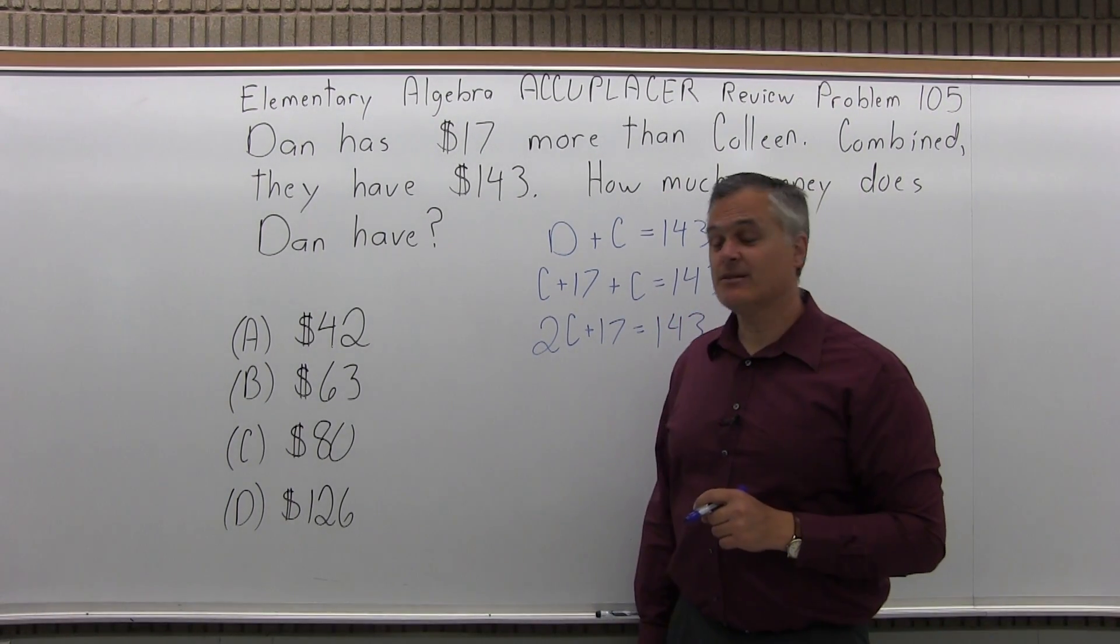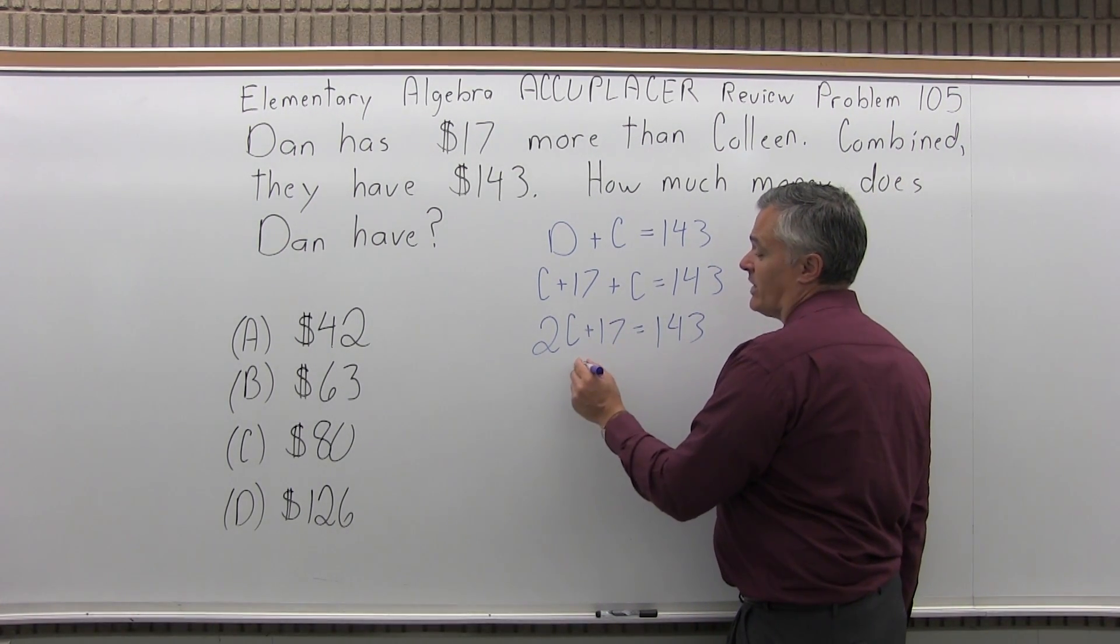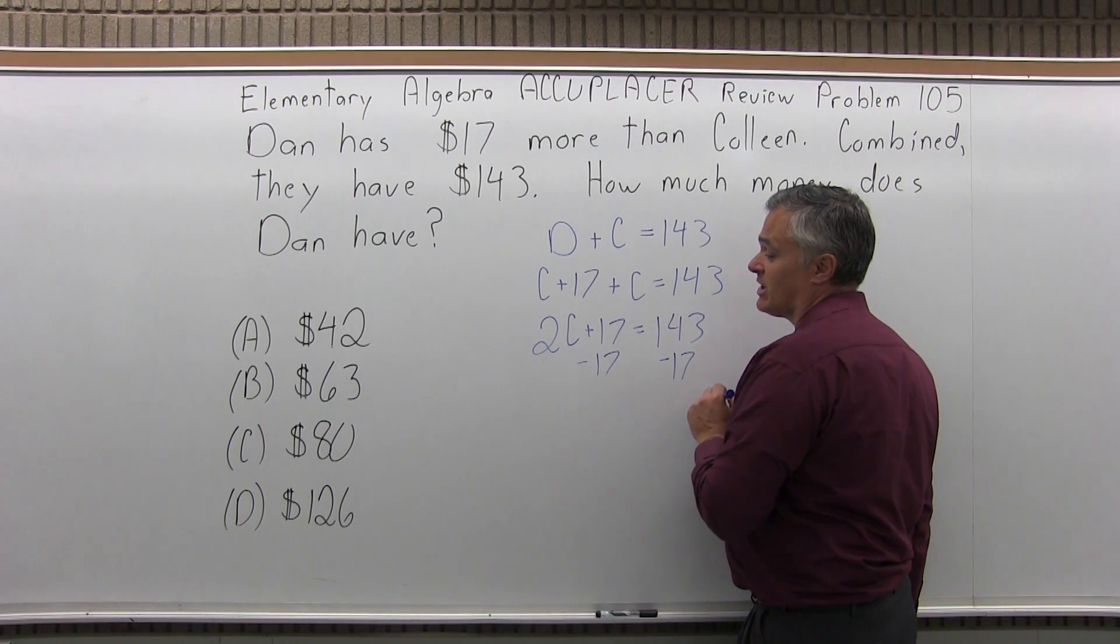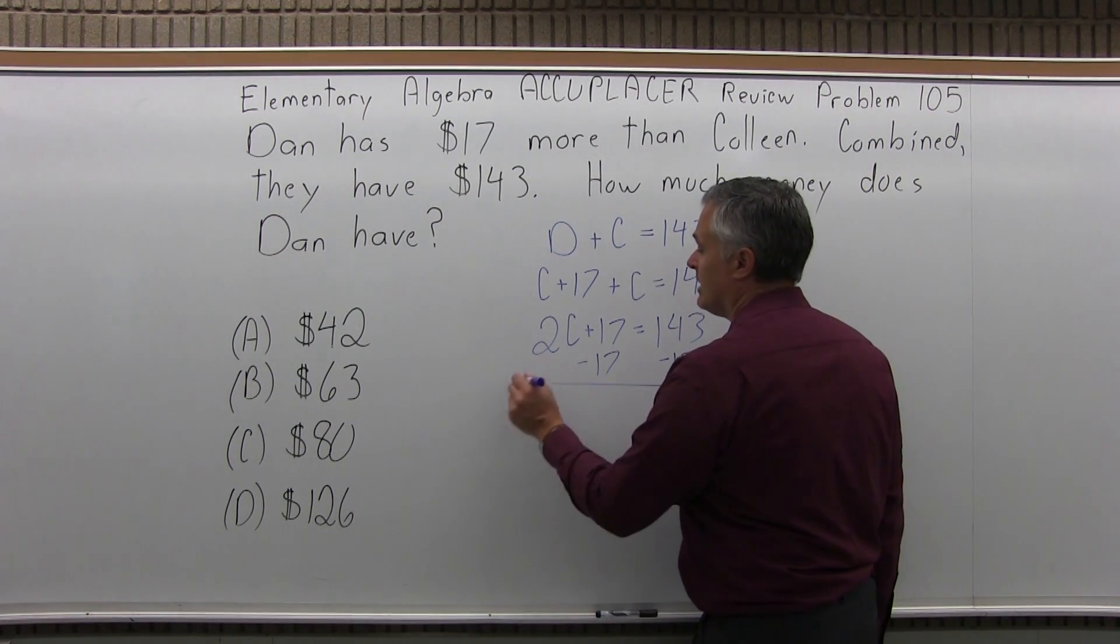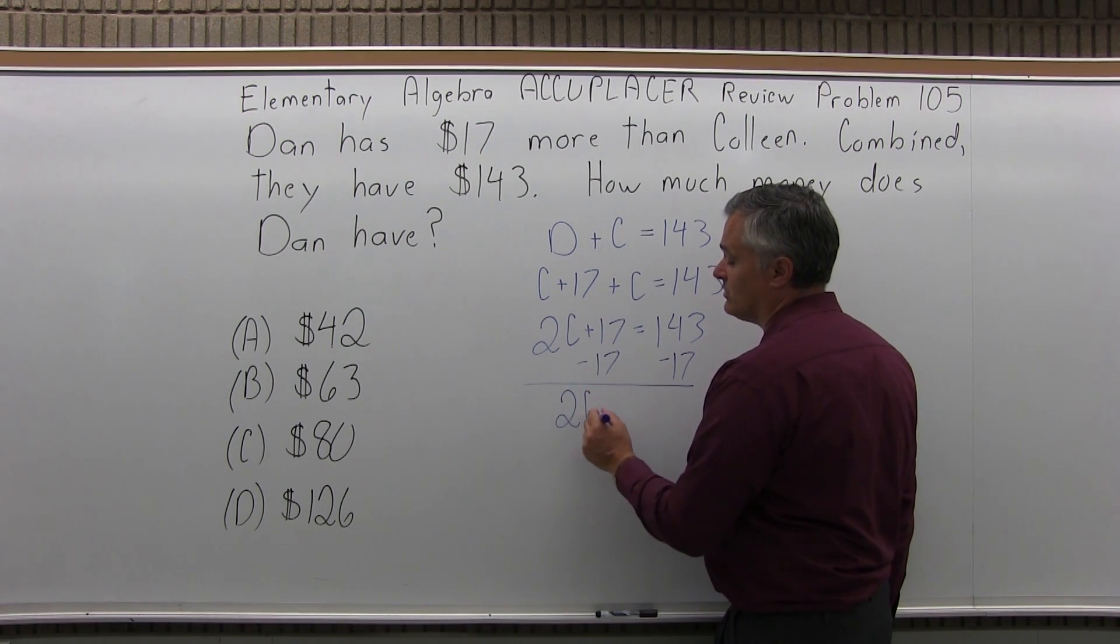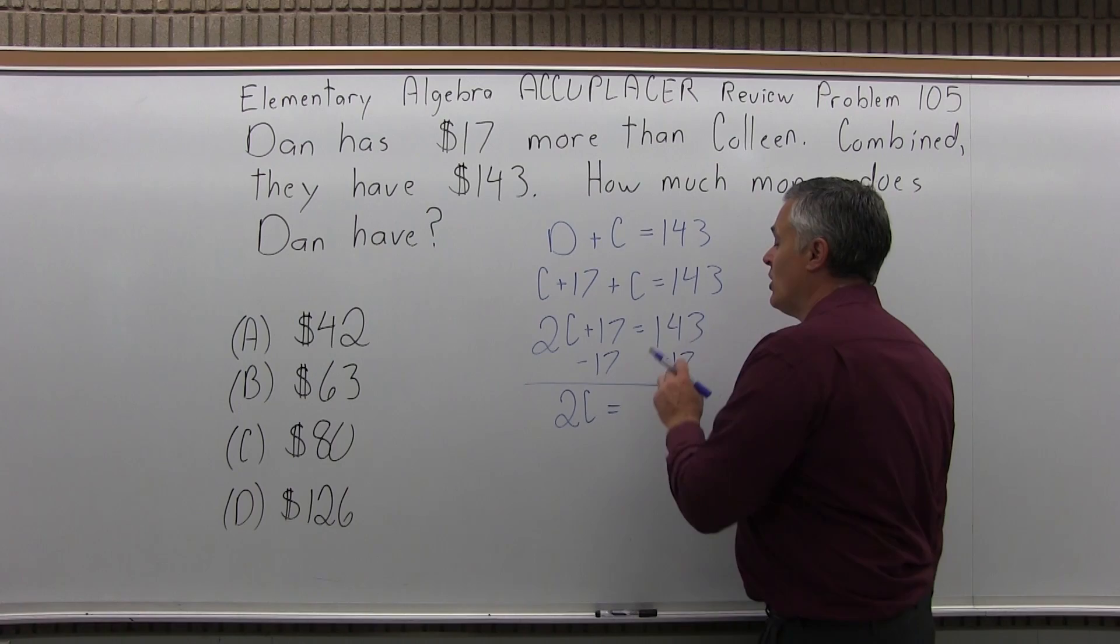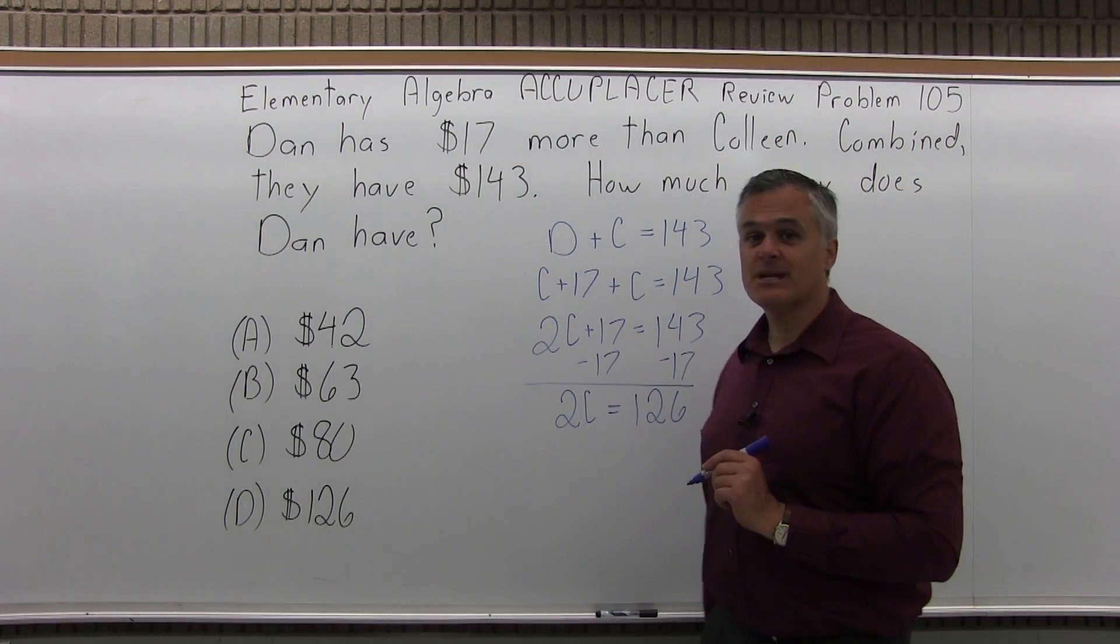Now at this point, it's not that tough to solve. First, let's get rid of the 17. So I have an equation. I can do whatever I want as long as I do the same thing on both sides. So on both sides, I'm going to subtract 17. So on the left, 2C plus 17 minus 17 is just going to give me 2C equals 143 minus 17 is 126.